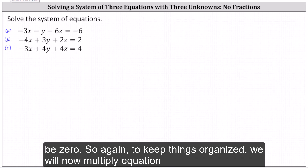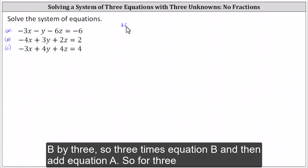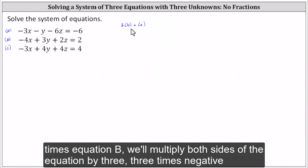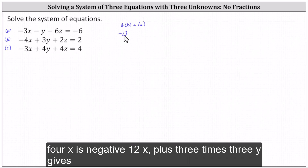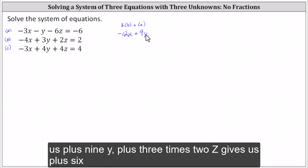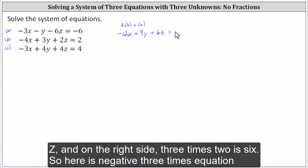So again, to keep things organized, we will now multiply equation B by three. So three times equation B, and then add equation A. We multiply both sides of the equation by three: three times negative four X is negative 12X, plus three times three Y gives us plus nine Y, plus three times two Z gives us plus six Z, and on the right side, three times two is six.